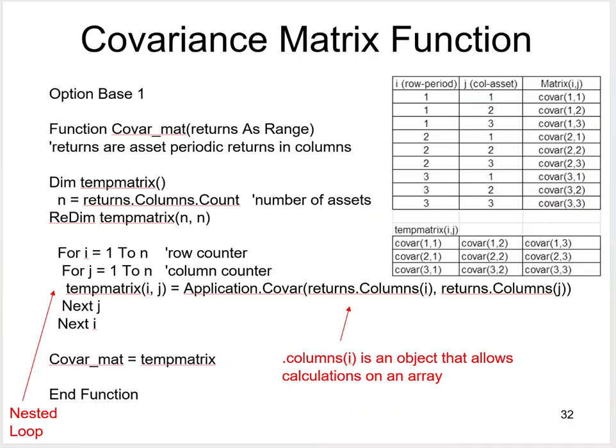Here's the program. First, I'm going to start with option base one because I'm going to manipulate arrays within VBA. It's much more straightforward if the first row and first column is called one, one and not zero, zero. Option base one has to be at the top of the module. If you paste this and option base one is not at the top, the program is going to blow up. The function is called covariance matrix, has one parameter returns as range. I have a single quote here: returns are asset periodic returns in columns.